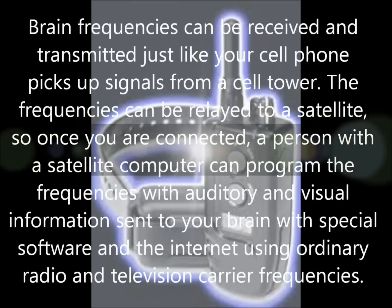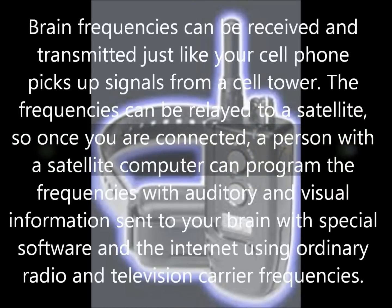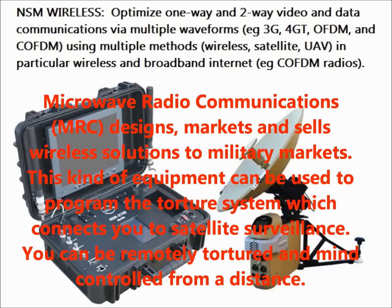Brain frequencies can be received and transmitted just like your cell phone picks up signals from a cell tower. The frequencies can be relayed to a satellite, so once you're connected, a person with a satellite computer can program the frequencies with auditory and visual information sent to your brain with special software and the internet using ordinary radio and television carrier frequencies. There are various companies like Microwave Radio Communications which designs, markets, and sells wireless solutions to military markets — this kind of equipment can be used to program the torture system which connects you to satellite surveillance.